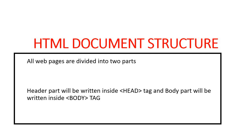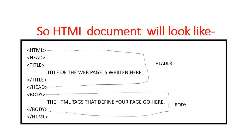An HTML document consists of two parts when you run a web page: the header and the body. The header part is written inside the head tag and the body part is written inside the body tag. In the example shown, this is the head part and this is the body part. The whole head and body are written inside the HTML tag so the browser knows what type of document it is.